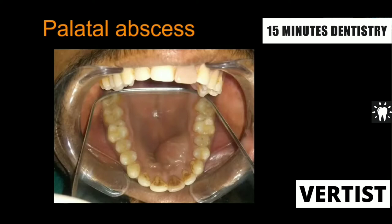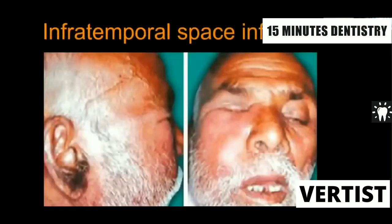Whether there is lingual or palatal cortical plate involvement all depends upon the cortical plates. Whenever the cortical plate is thinner on the lingual side or on the buccal side, the spread of infection will be more prominent on that particular side — either buccal or lingual. You can see the intraoral palatal involvement of the region, and the infratemporal region with the patient looking ill.